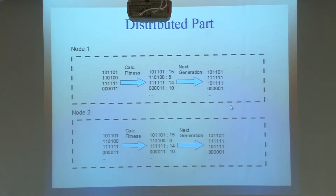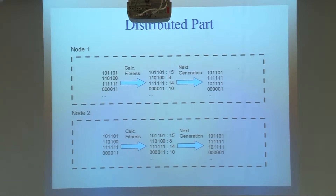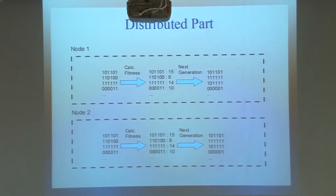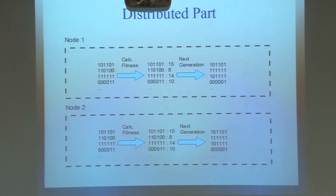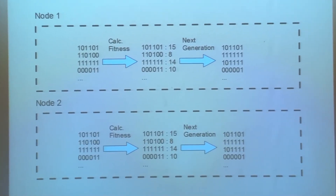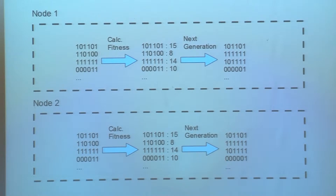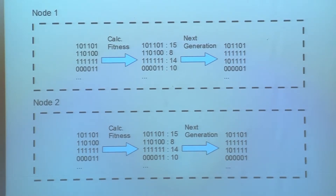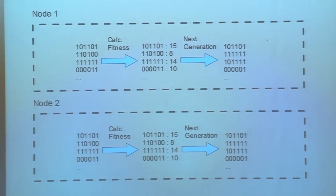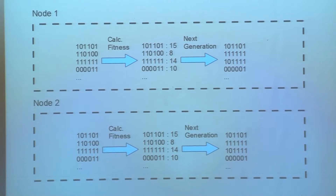What I'd like to do is make it distributed. Each node does these calculations and generates their own individuals. At the end of each generation — or based on the communication scheme that you provide — it syncs the best individuals between nodes, so that one is not wasting its time on less fit individuals when another node is already way ahead of it.